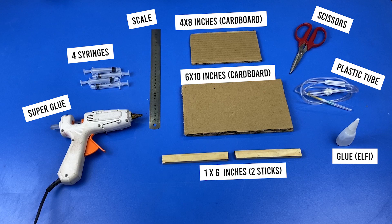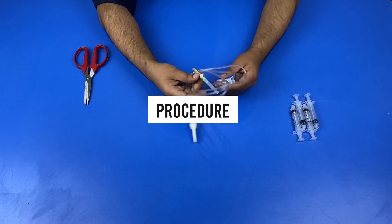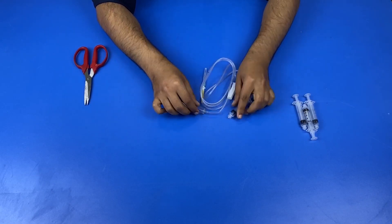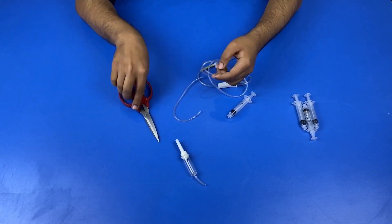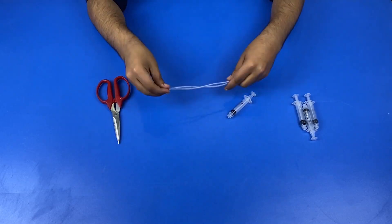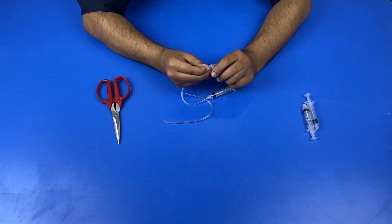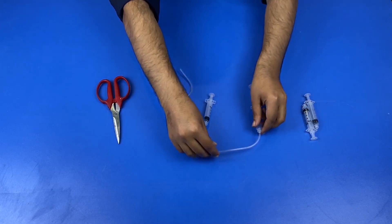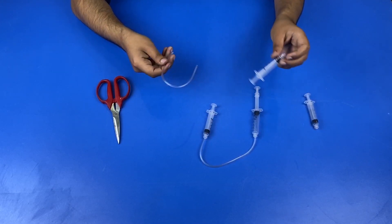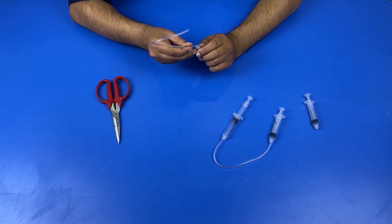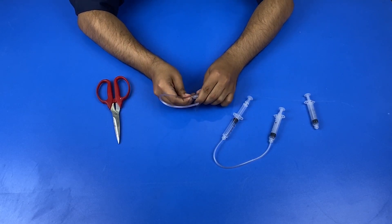Now take a plastic tube and cut two long pieces from it. After cutting the pieces, attach each side of the tube with syringe top. When one tube fits two syringes, apply the same process for the other tube. Fix both the tube ends to the syringe hole.